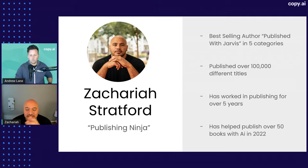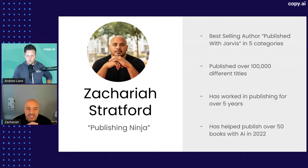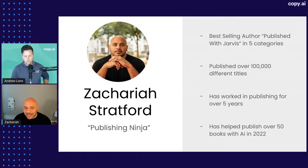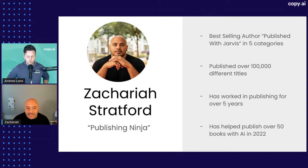My name is Zachariah Stratford — I call myself a publishing ninja. I'm a bestselling author with my book published in five different categories. I've helped publish over 100,000 different titles in the five years I've been in publishing. With AI specifically, I've helped publish over 50 books. AI is a really great tool and a big catalyst for me in teaching and coaching because it's helped so many people who want to write a book actually get there.